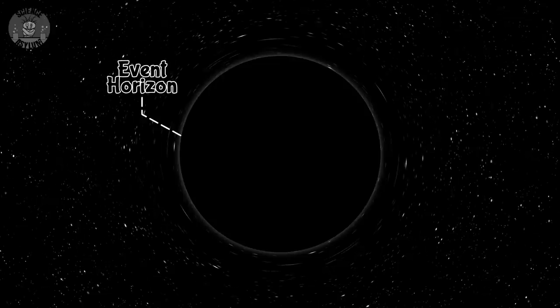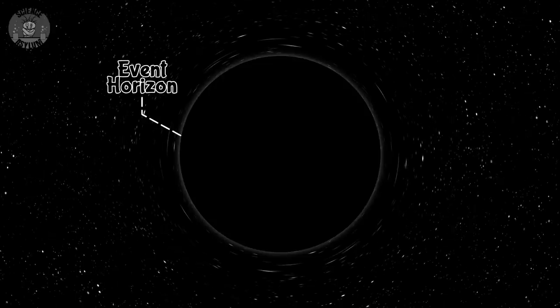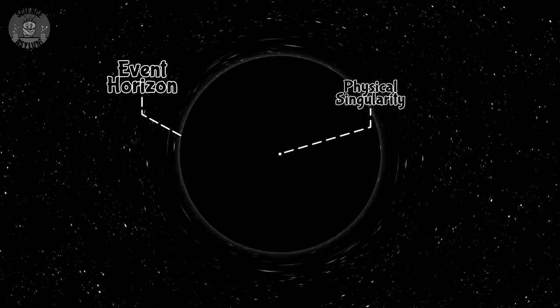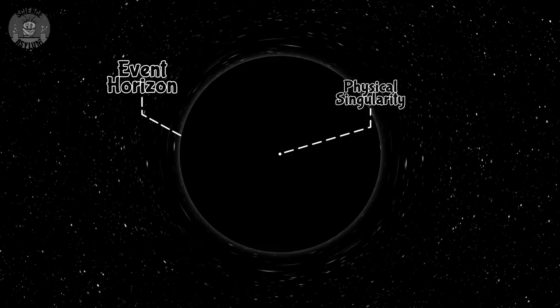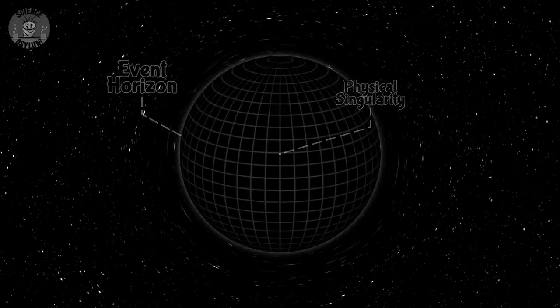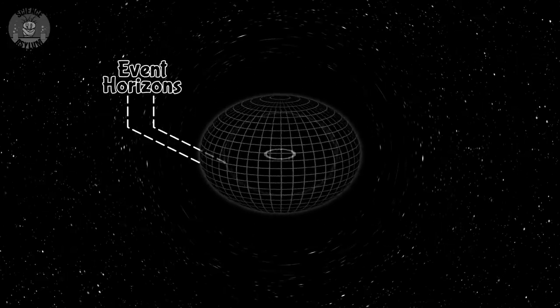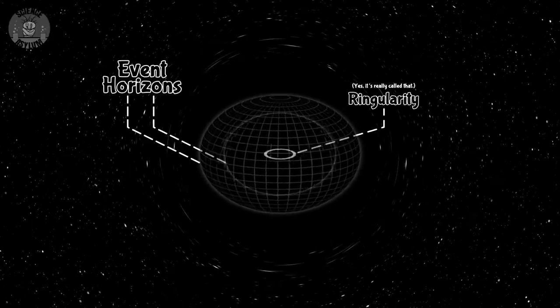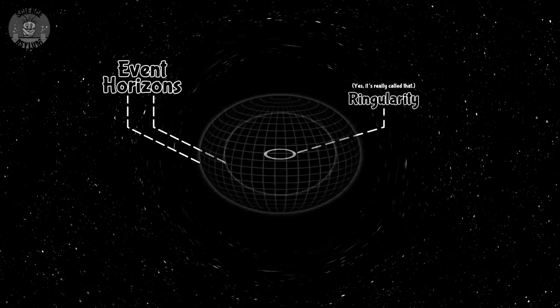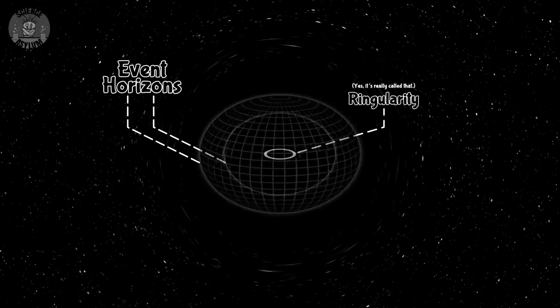Let's compare and contrast. According to General Relativity, a non-rotating black hole has two parts: an event horizon, a boundary we can't see beyond, and a physical singularity — a point of infinite density and infinite curvature. A rotating black hole has two event horizons and a ring singularity, or ringularity, which is a ring of infinite density and curvature.